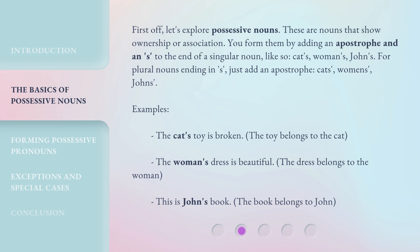For plural nouns ending in S, just add an apostrophe: cats', women's, Johns'. Examples: The cat's toy is broken — the toy belongs to the cat. The woman's dress is beautiful — the dress belongs to the woman. This is John's book — the book belongs to John.